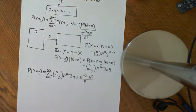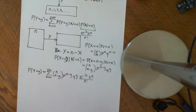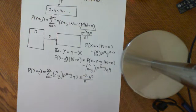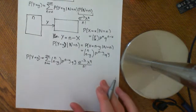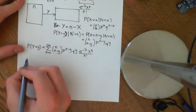What is surprising about this result is that these two random variables, big X and big Y, are going to be shown to be independent. What we now need to do is calculate the joint PMF of X and Y for this probability space.